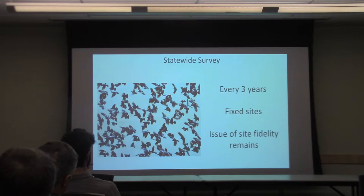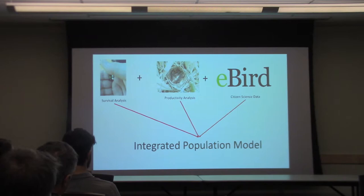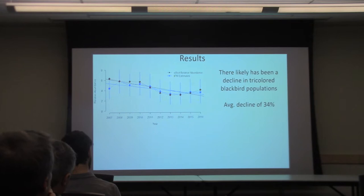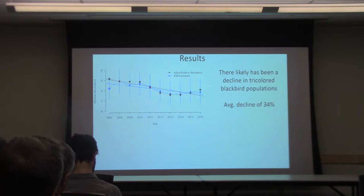So we used eBird as the count data in the IPM — and I can get as detailed into the modeling as you want later; I've left it out for now but I'm happy to talk about it. The results showed there has likely been a decline in tricolor blackbird populations.